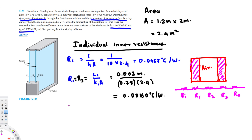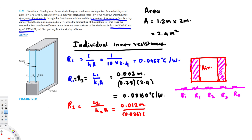R2 is also conduction, using L2 over k2 times A. L2 is the air gap thickness of 12 millimeters, so 0.012 meters, divided by the thermal conductivity of air 0.026, times the area 2.4. That gives R2 equals 0.19231 degrees Celsius per watt. We already know R1 and R3 are equal.